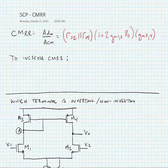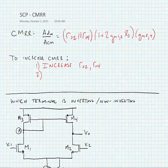We can easily see what we need to do to increase CMRR. Firstly, we could increase RO2 or RO4, and we would do this by changing the sizing of the transistors or the current in the transistors. Of course we want RS to be as large as possible — this means we want it closer to an ideal current source. And further, we also want GM34 to be large.